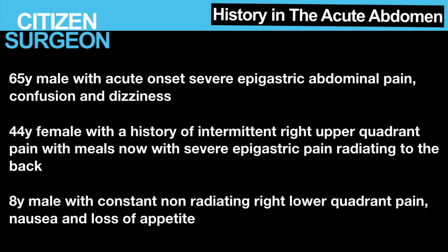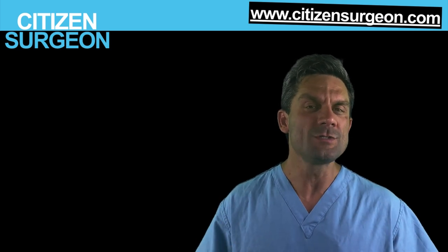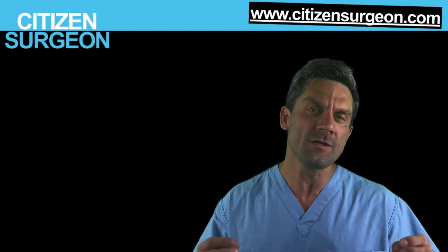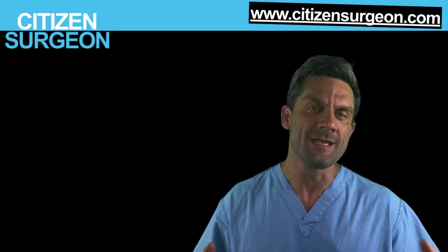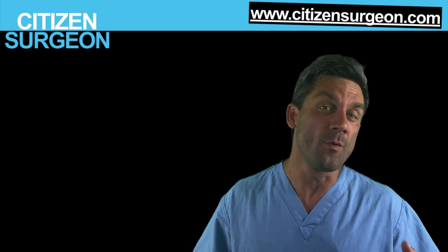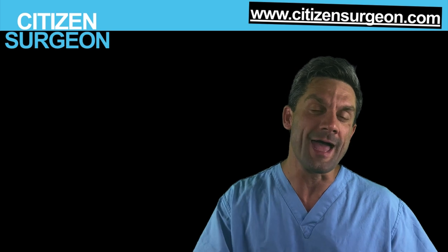A few clinical scenarios to think about before we dive into the history: a 65-year-old male with acute onset severe epigastric pain, confusion, and dizziness; a 44-year-old female with a history of intermittent right upper quadrant pain with meals, now with severe epigastric pain radiating to the back; and an eight-year-old male with constant non-radiating right lower quadrant pain with nausea and loss of appetite. As we go through the history and physical exam, think about how to use particular questions and exam findings to point you toward the right diagnosis.